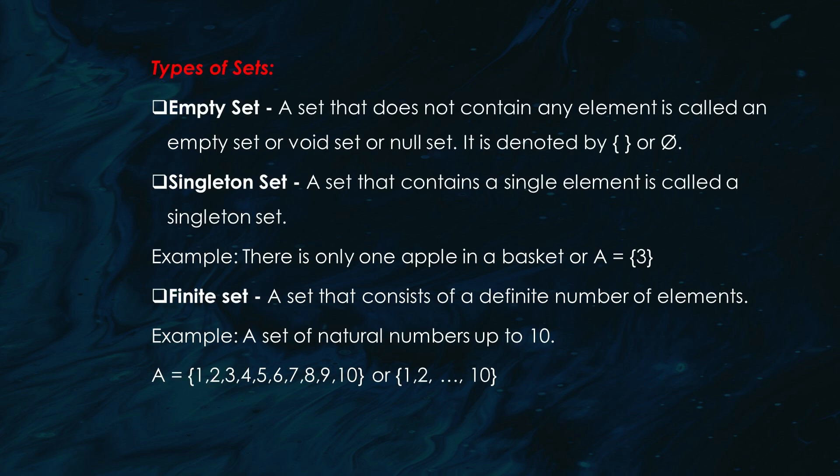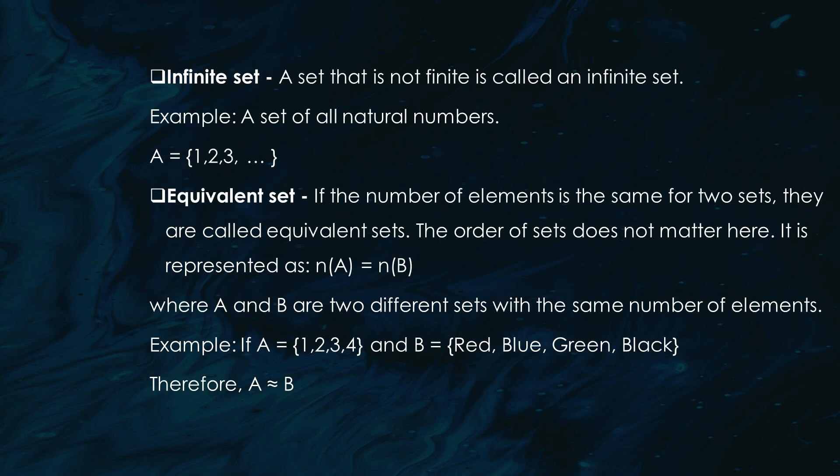Sets can come in all shapes and sizes and they have cool names too. (1) Empty set — a set that has no elements at all, like an empty box. (2) Singleton set — a set with exactly one element, like set A = {3}. (3) Finite set — a set with a specific number of elements, like set A = {1, 2, 3, 4, 5}. (4) Infinite set — a set that goes on forever, like the set of all natural numbers. There are even more types, but we'll focus on these for now.